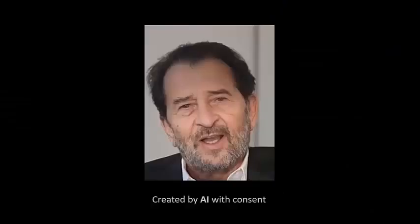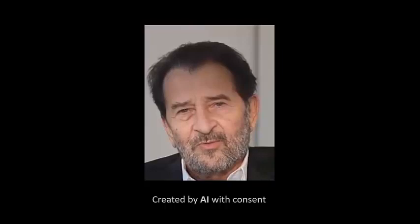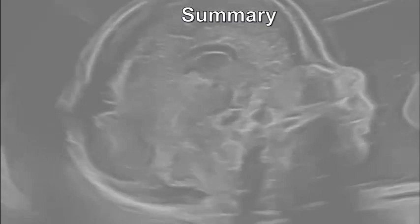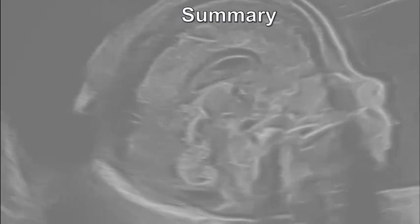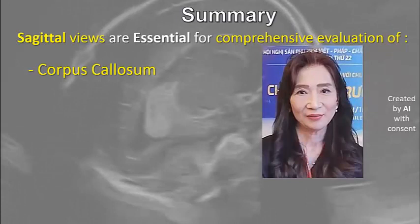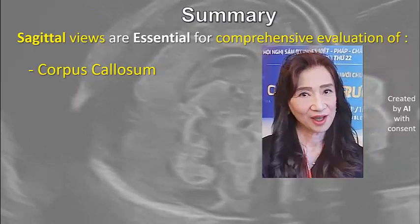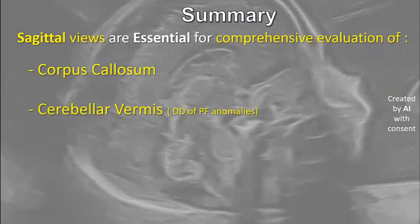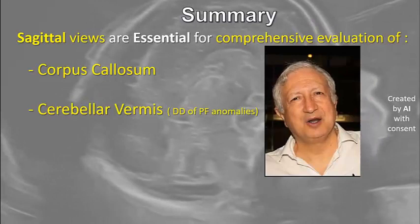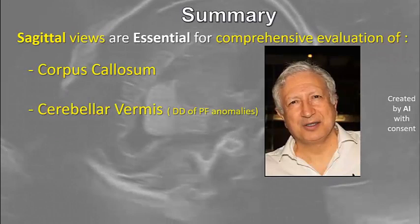Guillermo created an AI avatar to introduce the last slide with take-home messages, using AI with permission of experts in fetal CNS ultrasound. As Guillermo said, the mid-sagittal view is crucial for a proper evaluation of corpus callosum anomalies, especially in cases of partial agenesis or dysplastic corpus callosum. The sagittal view is the best for a comprehensive evaluation of the cerebellar vermis and can be very helpful in the differential diagnosis of posterior fossa cystic anomalies.